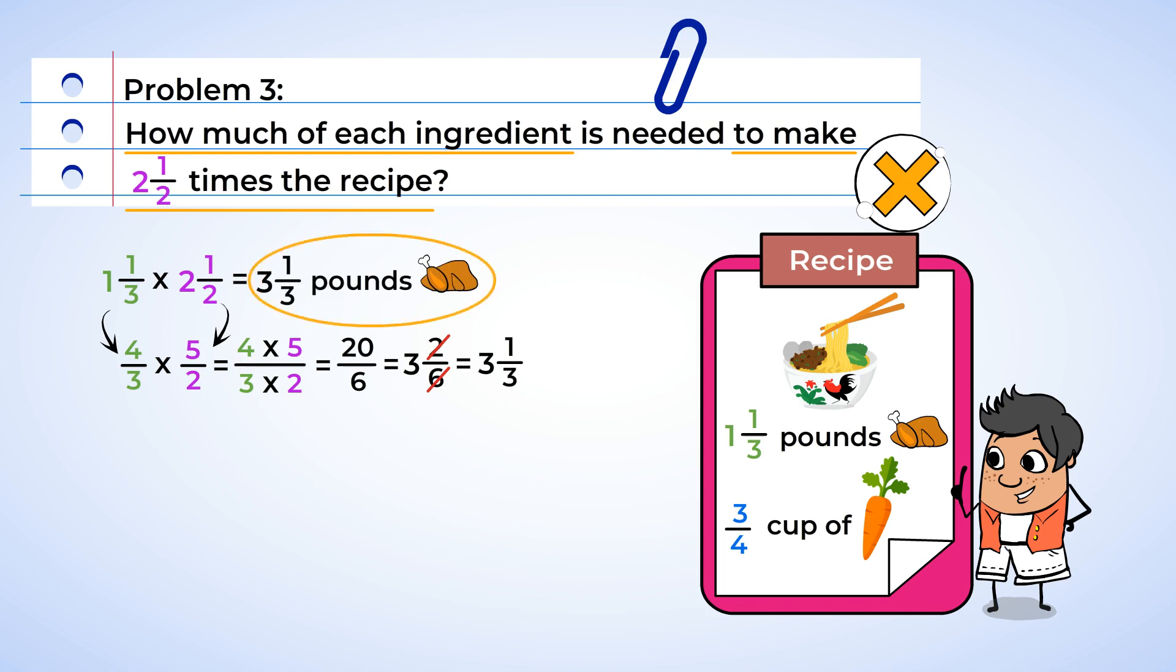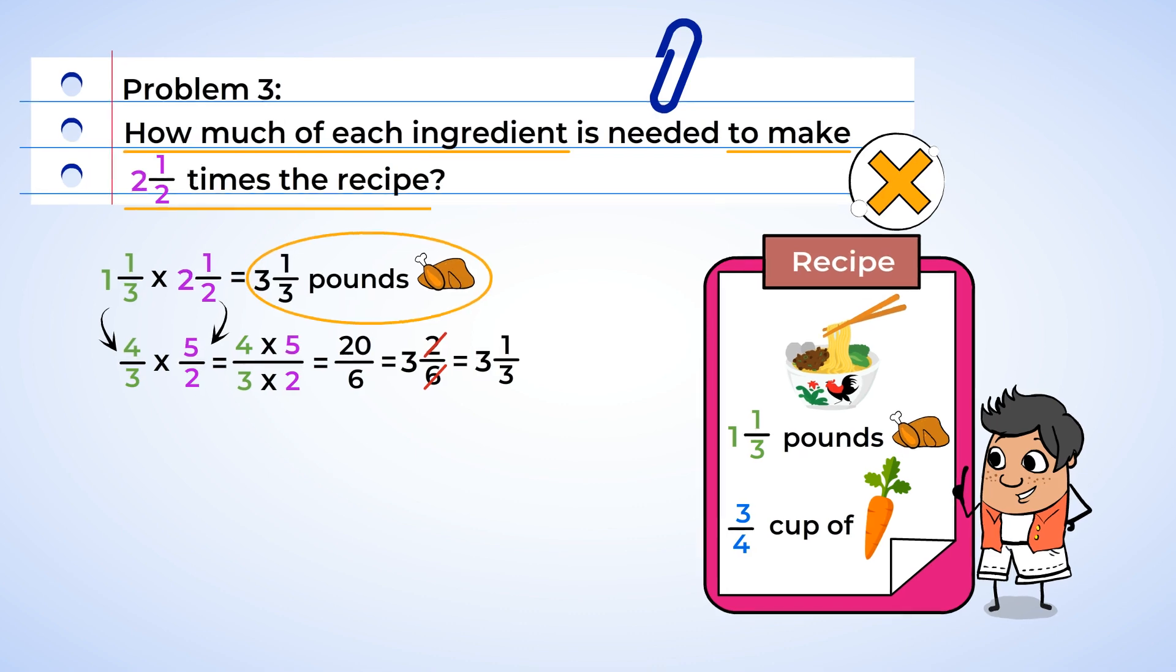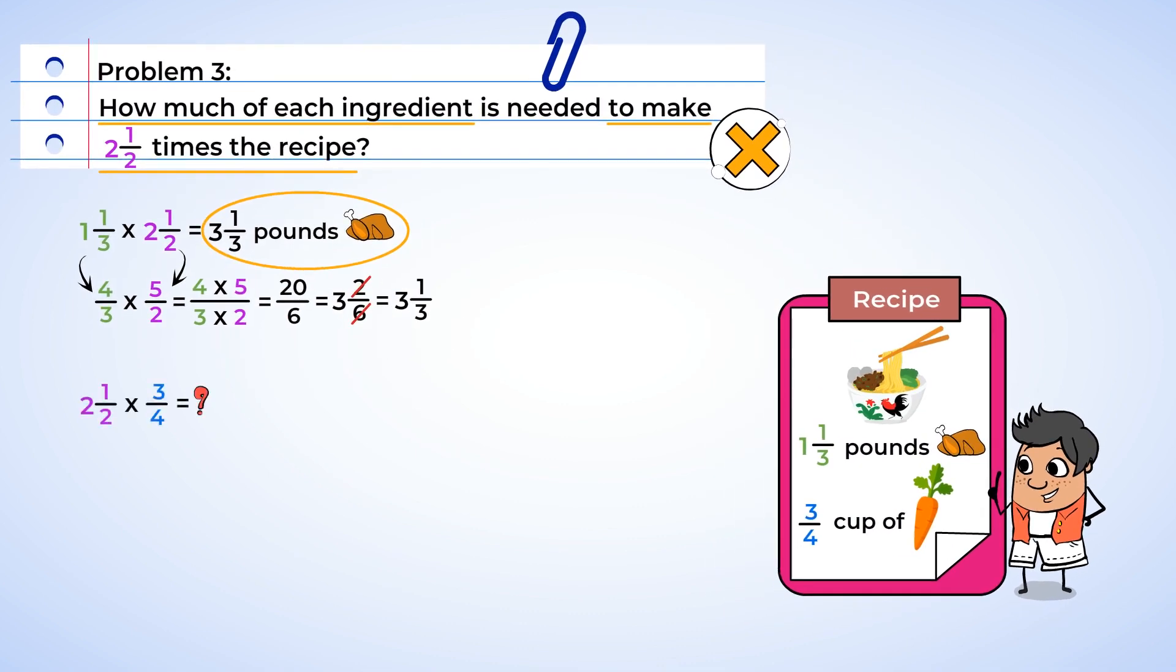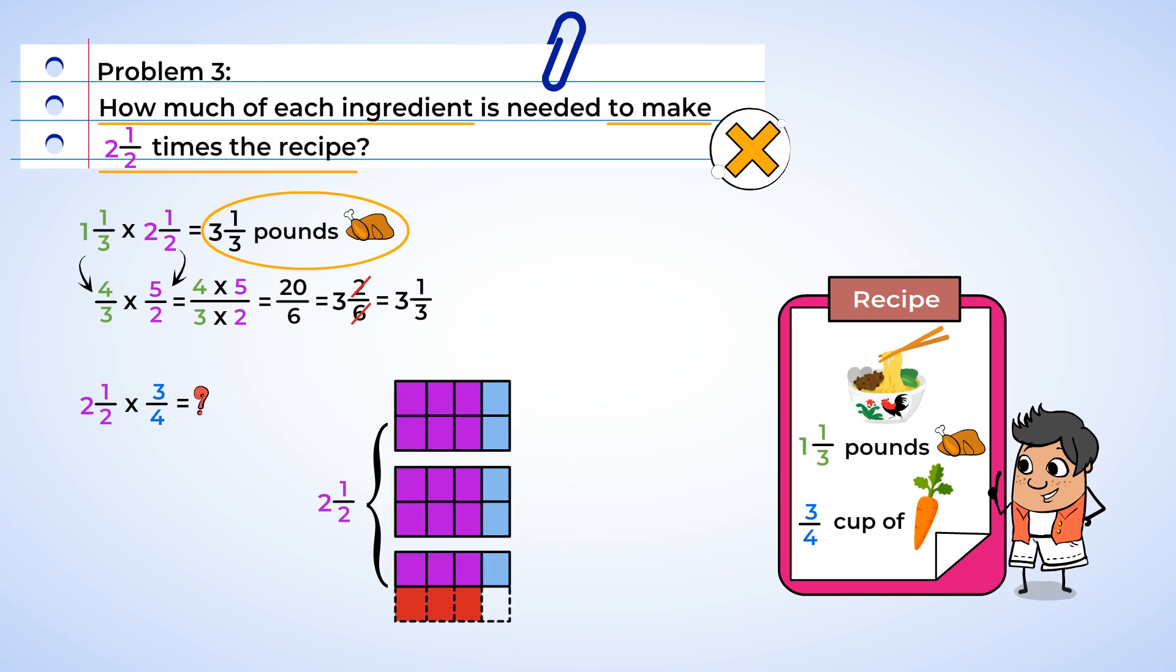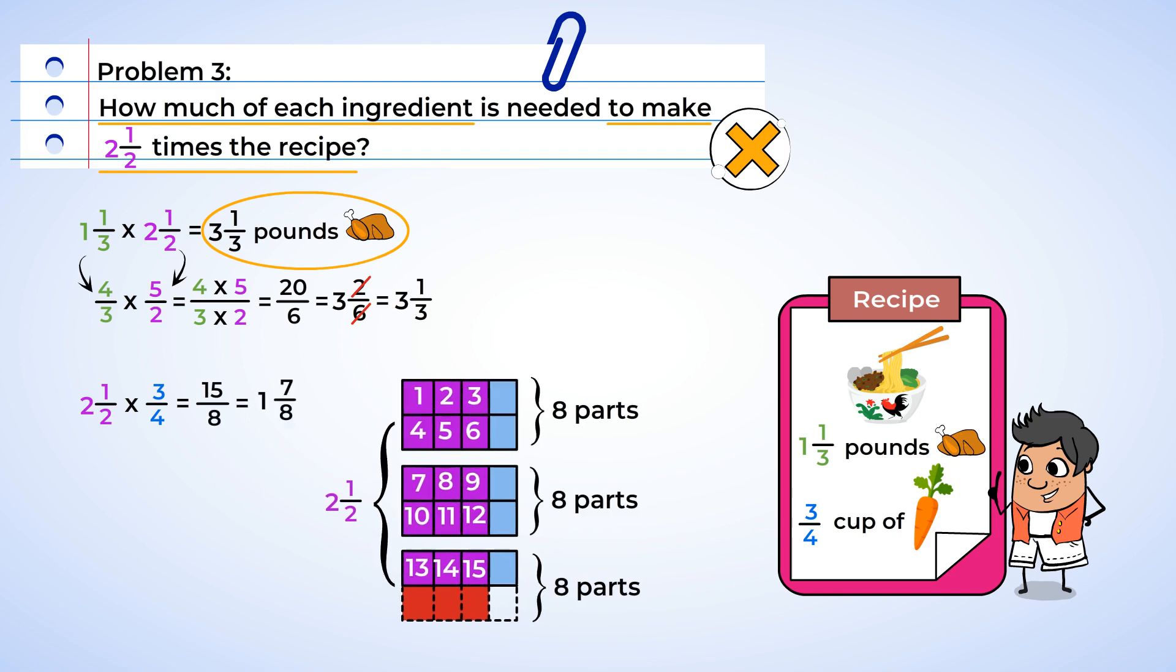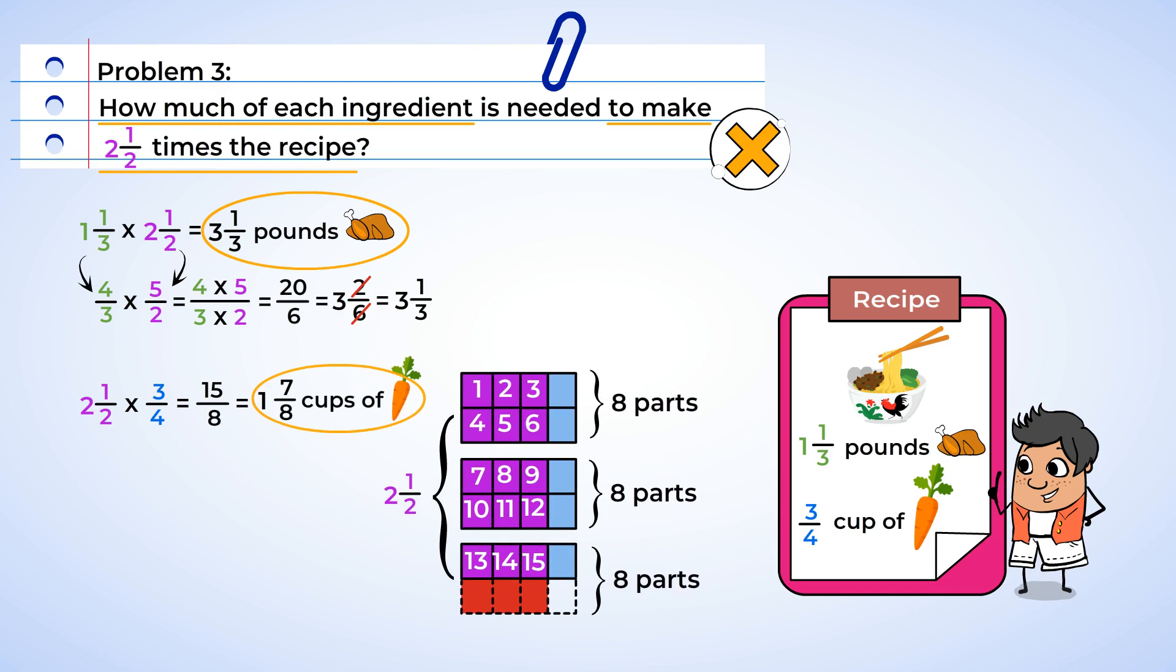And let's try to use a model to help us find the total amount of carrots needed. And now we know we need 3 and 1 third pounds of chicken. And shade in 3 to show the multiplication of 3 fourths. Fantastic! Each box has 8 parts, and there are a total of 15 parts shaded purple. And that means we're going to need 15 eighths cups of carrots. Let's change that to a mixed number. 1 and 7 eighths cups of carrots.